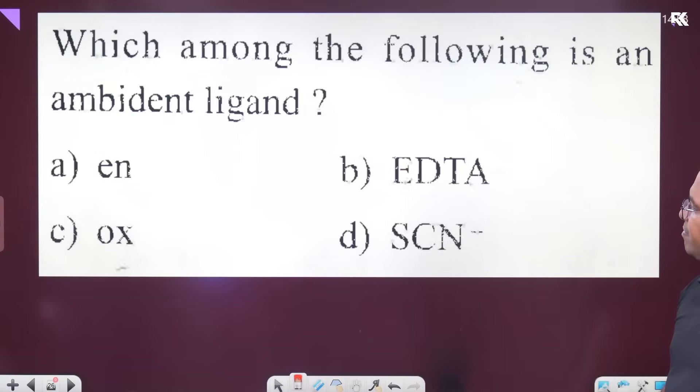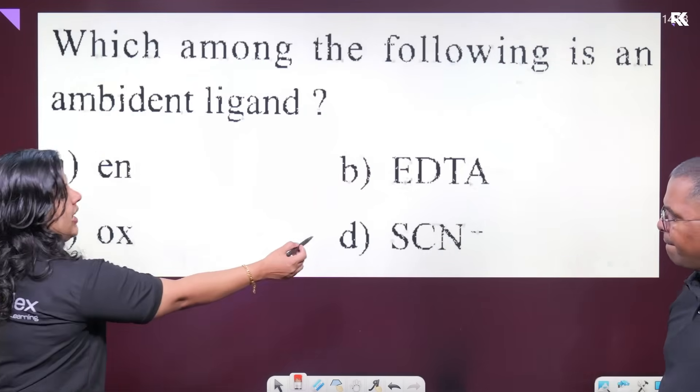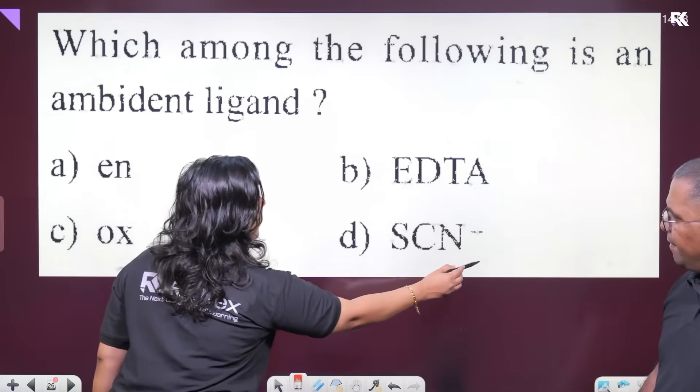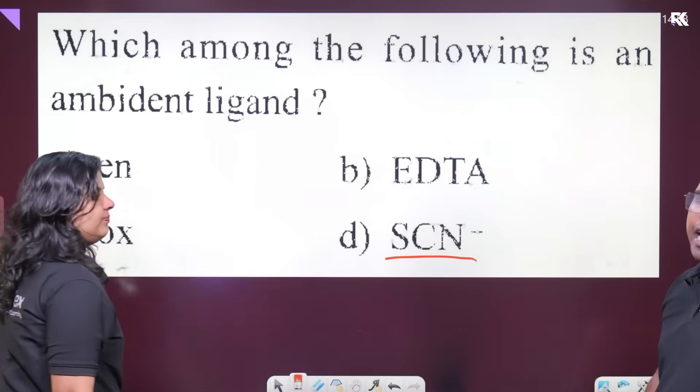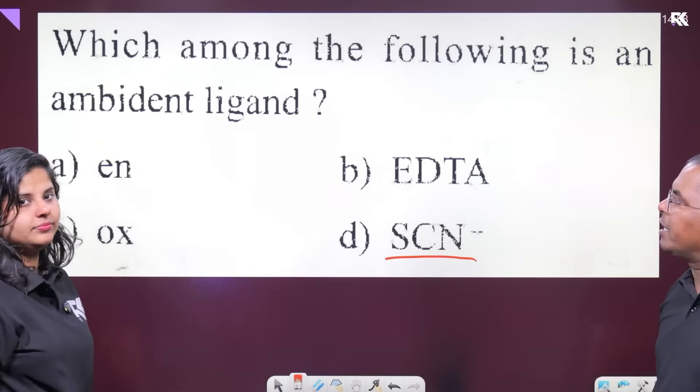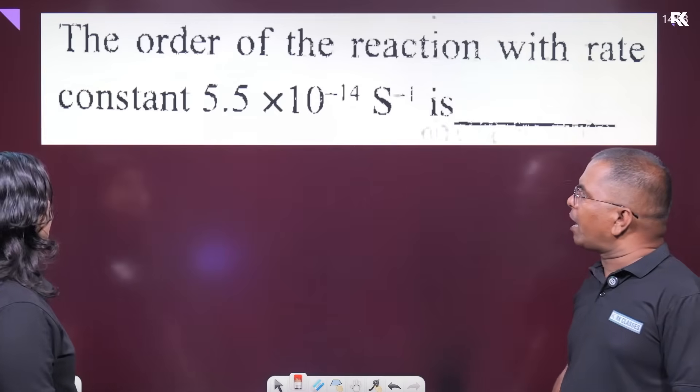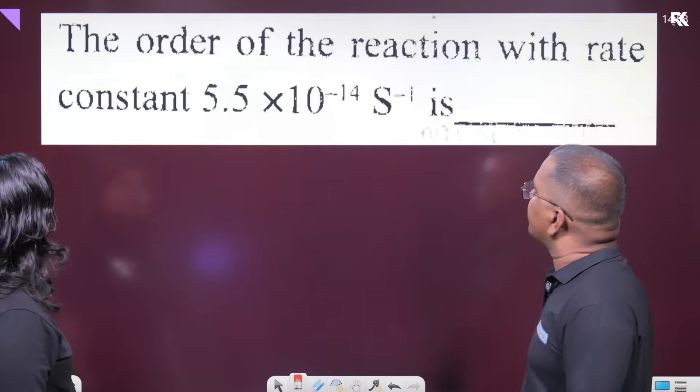The ambidentate ligand among the following is SCN⁻. If a ligand can bond through two different atoms, it is called an ambidentate ligand. Yes.